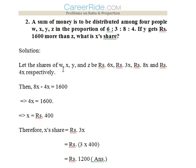Now we assume the share of W, X, Y, Z to be 6x, 3x, 8x, and 4x. And as the second statement of the question says that Y gets rupees 1600 more than Z...